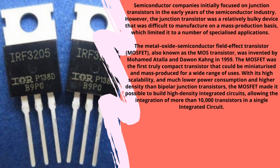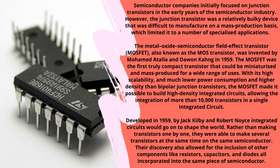The metal-oxide-semiconductor field-effect transistor — MOSFET, also known as the MOS transistor — was invented in 1959. The MOSFET was the first truly compact transistor that could be miniaturized and mass-produced for a wide range of uses. With high scalability, much lower power consumption, and higher density than bipolar junction transistors, the MOSFET made it possible to build high-density integrated circuits, allowing the integration of more than 10,000 transistors in a single chip. Integrated circuits allowed several transistors to be made simultaneously on the same semiconductor, along with other components like resistors, capacitors, and diodes.